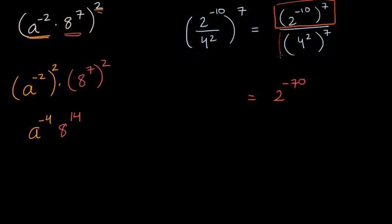And then in the denominator, four to the second power raised to the seventh power — two times seven is fourteen — so that's going to be four to the fourteenth power.